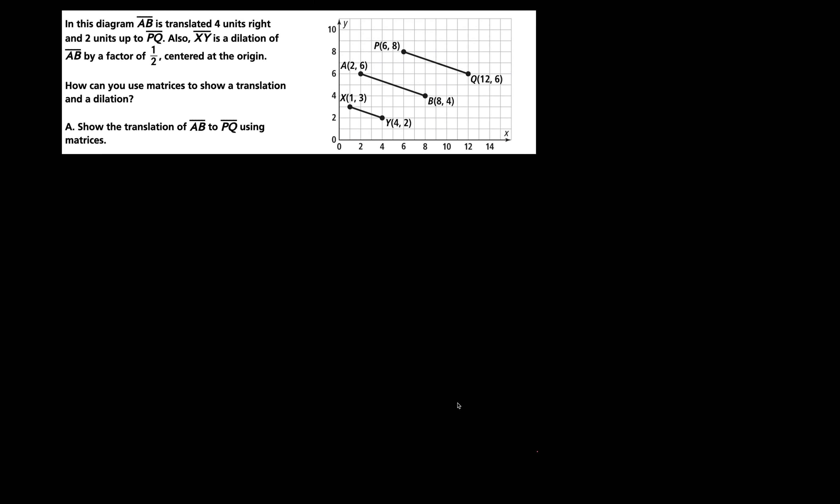In the diagram, line AB is translated four units right and two units up from PQ. Also, XY is a dilation of AB by a factor of one half, so we talked about scaling. Dilation makes it smaller, so this one's by a factor of a half, centered about the origin.